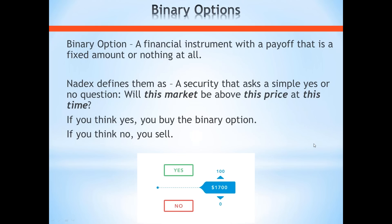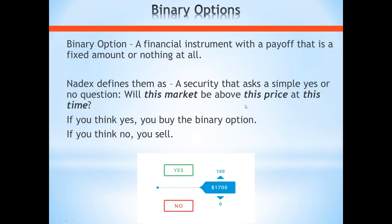The trade is set up like this: if you think the market will be above a certain price at a certain time, you're a buyer of the binary option. If you think it's going to be below at that time, you're a seller. If the market settles below the strike price, the contract settles at zero. If it settles above the strike price, it settles at $100. So I'm always buying or selling these contracts for some price in between zero and $100. That means I know at the onset of the trade exactly what my risk and reward is.